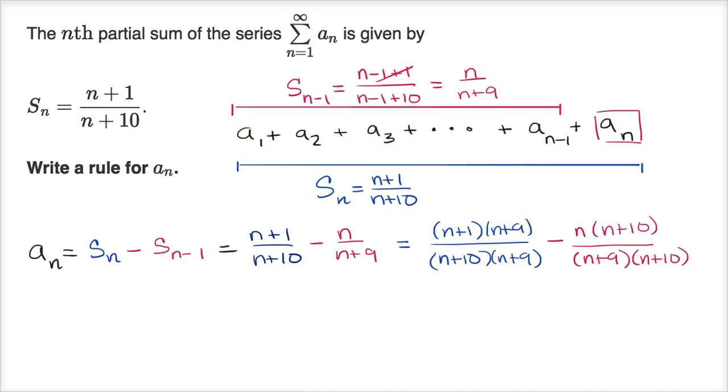And what does that give us? If we simplify up here, we're going to have, this is n² + 10n + 9. That's that.